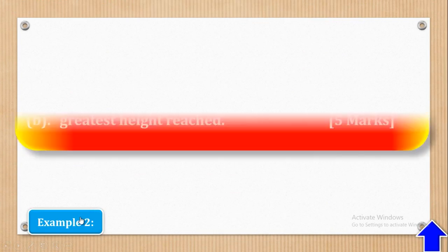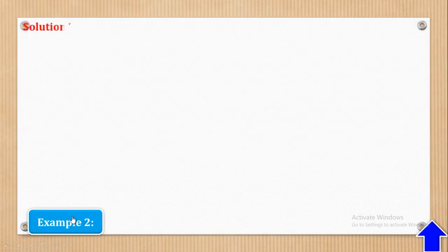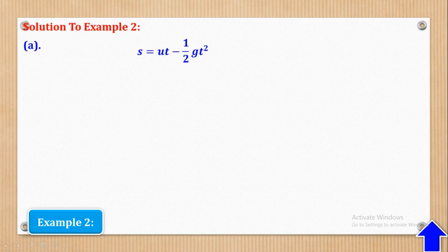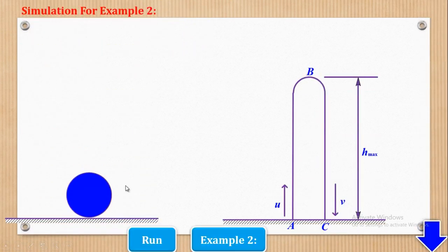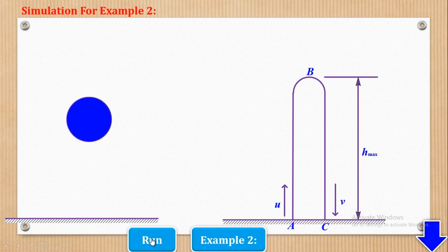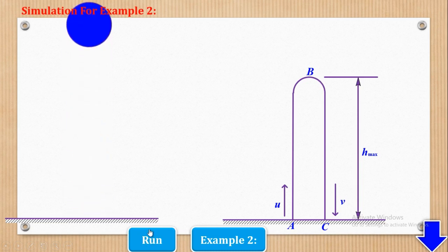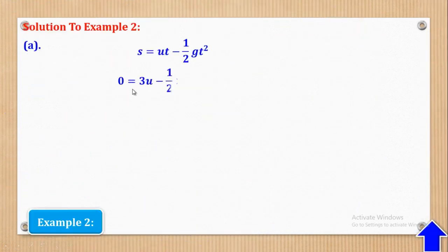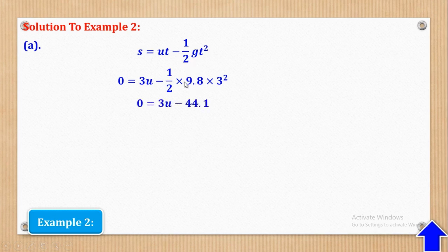With that information, I can now find the speed with which the ball was projected. I'm going to use S equals Ut minus half GT squared. But you should realize that S will be zero, because displacement means the particle returns back from the very point it started from, so displacement is zero vertically. Substituting S is zero, T is three, and G is 9.8, and simplifying to make U the subject, I come up with U being equal to 14.7 meters per second. That's what they wanted in part A.